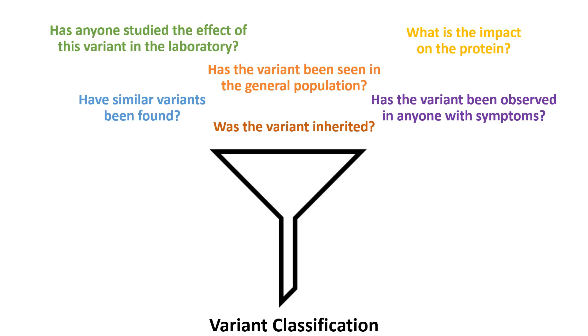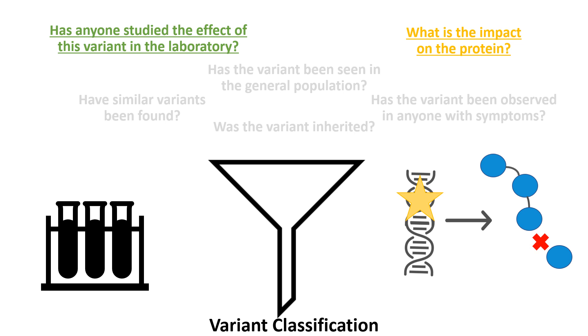There are several ways that we can learn more about a variant and its role in disease. First, new experimental studies focused on the effects of a variant might help us better understand how the variant impacts a protein's structure or function, and therefore its role in the body. For example, scientists may examine the symptoms of mice with a particular variant, or how the variant impacts cells grown in a laboratory.